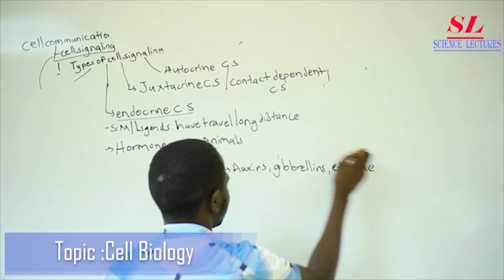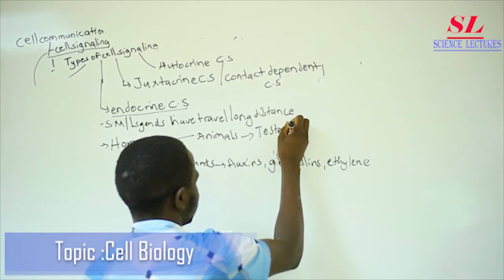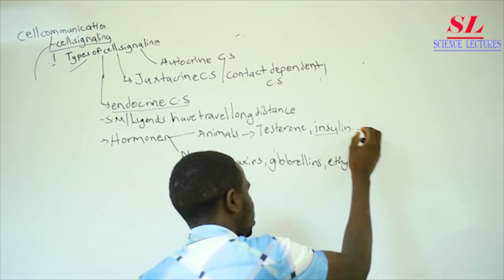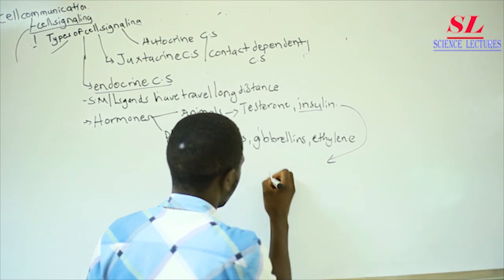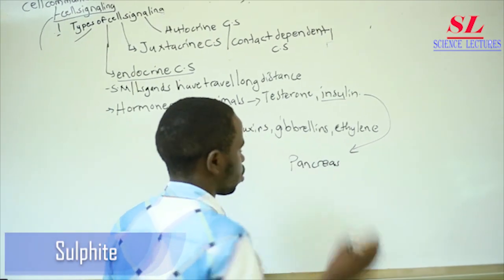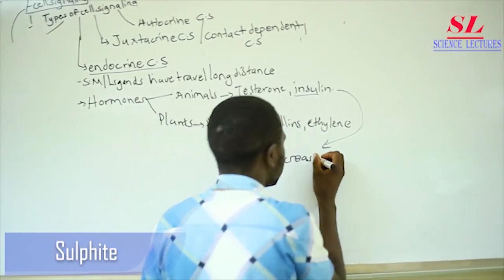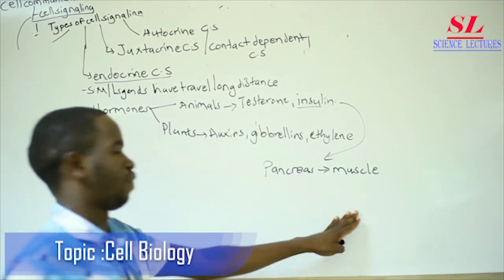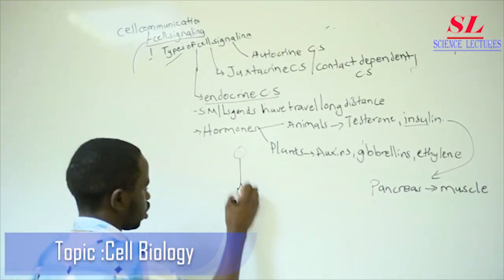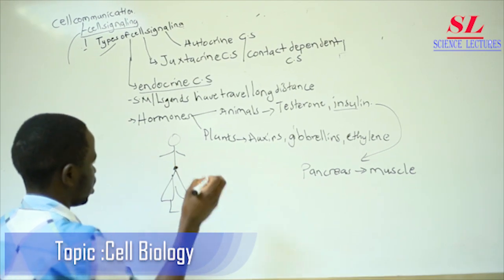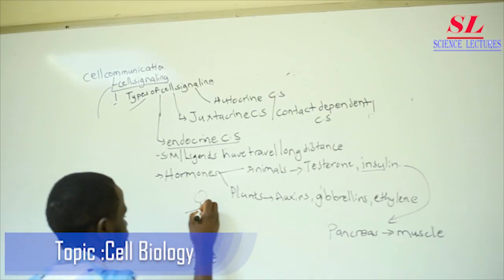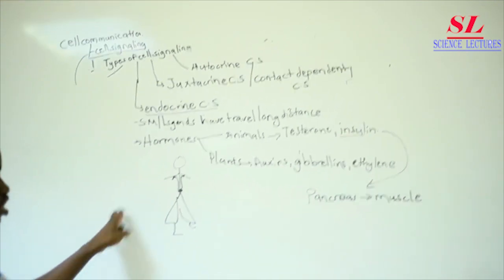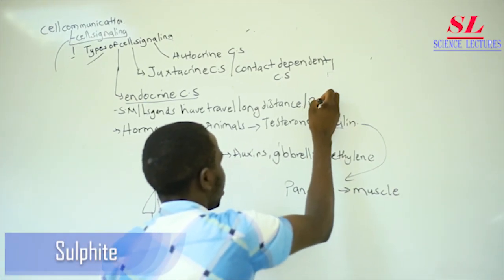Animal hormones are many — for example, testosterone, insulin, and others. Let me use insulin as an example. Insulin is produced by the pancreas, and one of its functions is to reduce sugar levels. Insulin usually has its effects on the muscles, so it has to travel from the pancreas to the muscles. Assuming my pancreas is located here, insulin has to travel until it reaches the muscle cells.